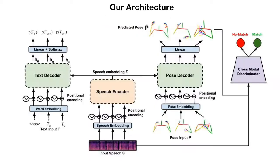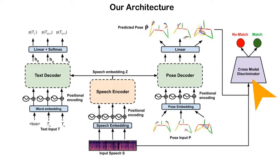Next, we design a multitasking network based on the transformer architecture. Our network aims to solve the main task of generating sign language from speech while also solving an auxiliary task of recognizing the given speech and words. We also employ a cross-modal discriminator to improve the quality of generations further. More details about the network architecture can be found in the main paper.